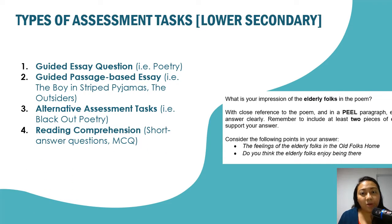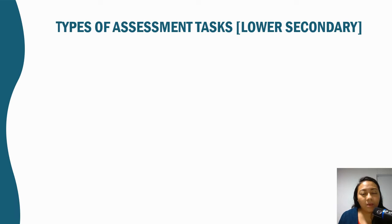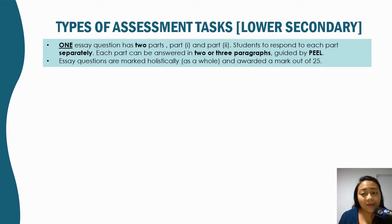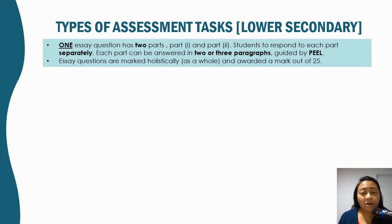Sometimes you have reading comprehension just to test your understanding and that's in MC. You are presented one essay question which has two parts, part one and part two. You're supposed to respond to each part separately, and each part can be answered in two or three paragraphs guided by PEEL. You don't have to follow the PEEL structure — it's a guideline to teach you organization. Essay questions are marked holistically as a whole and awarded a mark out of 25.